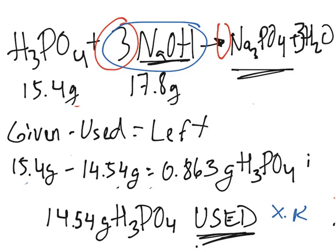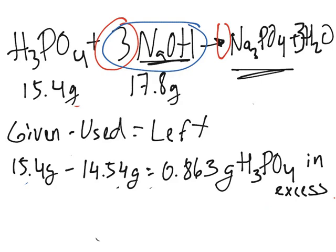When something is in excess, it means it wasn't fully used. That is how you solve a limiting reactant and excess reactant problem. I will be talking more about yields in the following video — theoretical yields, actual yields, and percentage yields.